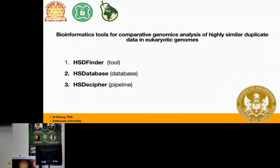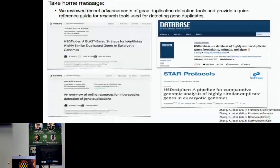Various bioinformatics resources have been developed to identify duplicate genes from single and multiple species. Here, we developed a BLAST-based web tool called HSDFinder and a database, HSD database, allowing researchers to easily identify intraspecies gene duplications with their genome of interest by following the HSDFinder pipeline. We have also reviewed recent advancements of gene duplication detection tools and summarized the metrics used to measure sequence identity among gene duplicates within species, serving as a quick reference guide for research tools used for detecting gene duplicates.